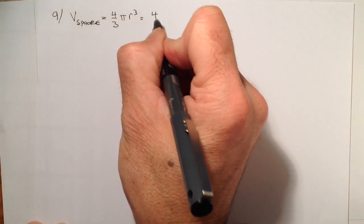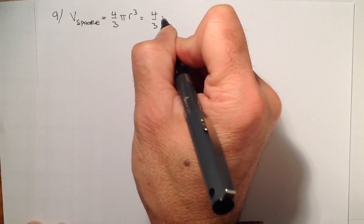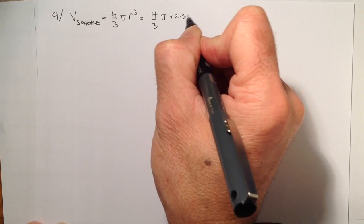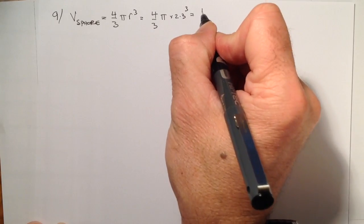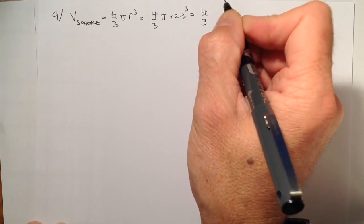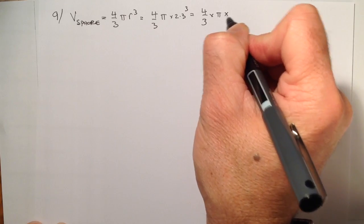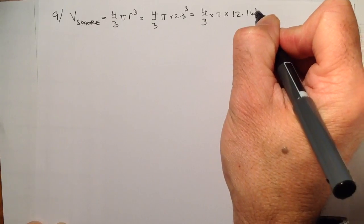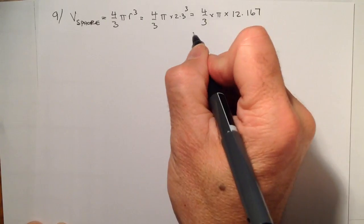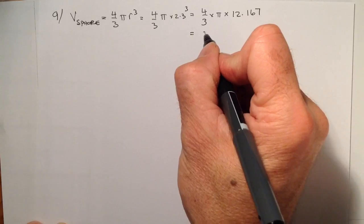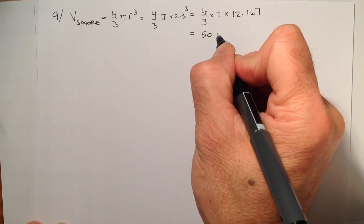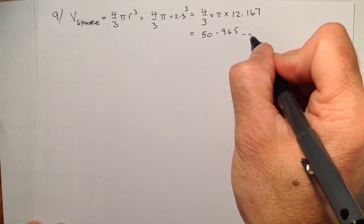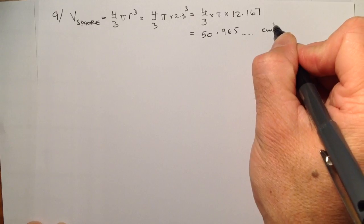From there I'm going to substitute in the radius of the sphere, which is given as 2.3. Working that through, I'll cube 2.3 on the calculator and that gives me 12.167. From there I'll work out the answer which is 50.965 and some further digits, in centimetres cubed.